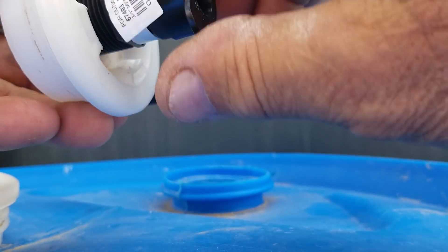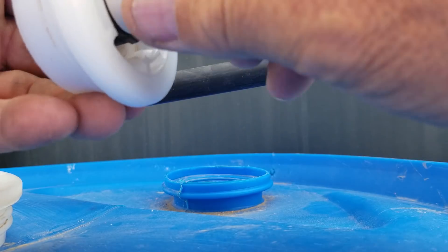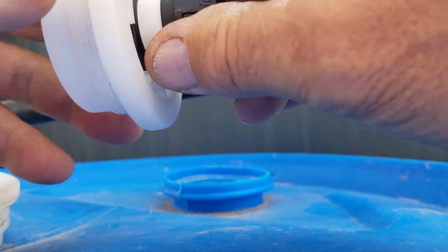Let me get that in there now. Don't want to cross thread it. Now these are tapered thread, and this is for air, so I'm not really concerned about putting sealant on here.